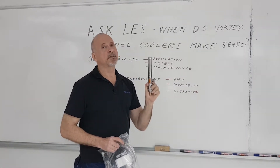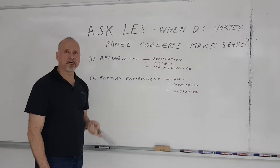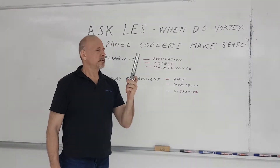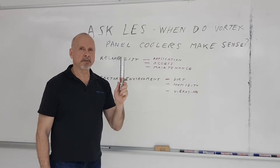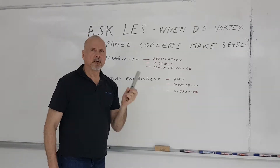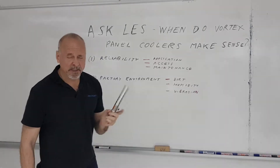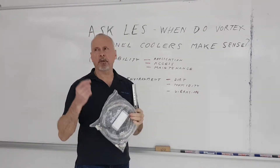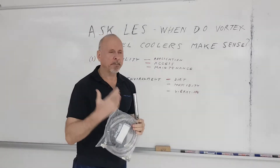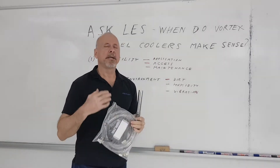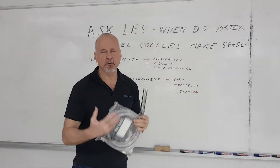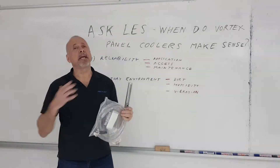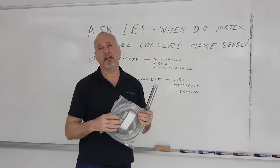Now, the factory environment. The dirtier the environment, the more it makes sense to use a vortex tube operated panel cooler. For example, I was in a factory where they were making a product that put a lot of fiber in the air, and this fiber kept getting into the control panels — they literally had to clean the control panels every single day.